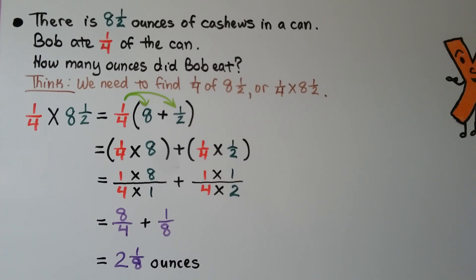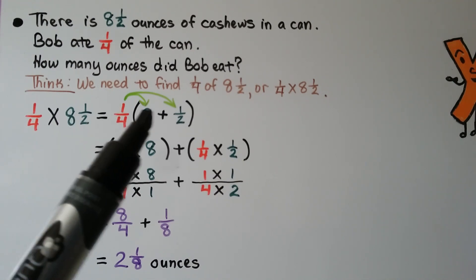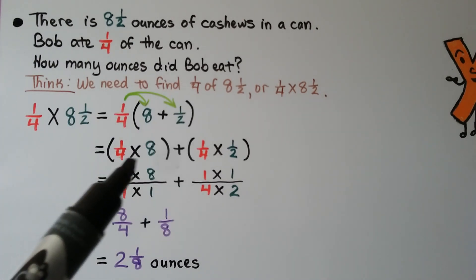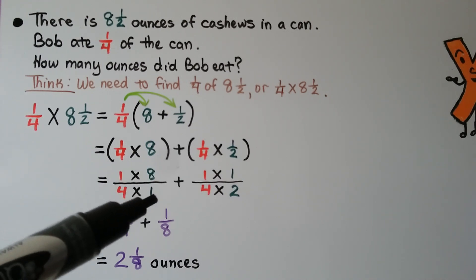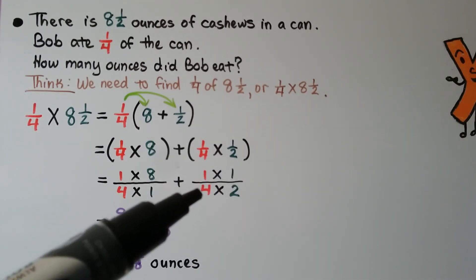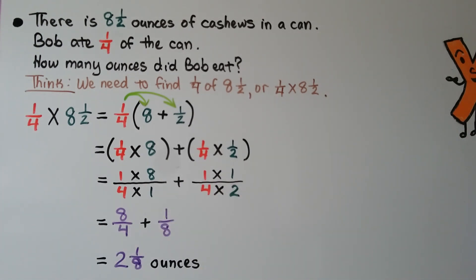There are 8 and a half ounces of cashews in a can. Bob ate 1 fourth of the can. How many ounces did Bob eat? We need to find 1 fourth of 8 and a half, or 1 fourth times 8 and a half. Using the distributive property, we break 8 and a half into 8 plus a half. 1 fourth times 8 is 8 fourths. 1 fourth times 1 half is 1 eighth. 8 fourths equals 2 whole, so Bob ate 2 and 1 eighth ounces.